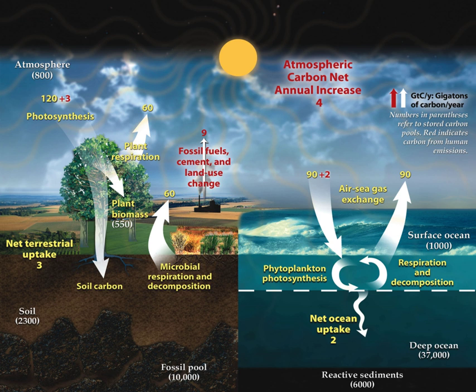Mineral sequestration aims to trap carbon in the form of solid carbonate salts. This process occurs slowly in nature and is responsible for the deposition and accumulation of limestone over geologic time. Carbonic acid in groundwater slowly reacts with complex silicates to dissolve calcium, magnesium, alkalis and silica and leave a residue of clay minerals. The dissolved calcium and magnesium react with bicarbonate to precipitate calcium and magnesium carbonates, a process that organisms use to make shells. When the organisms die, their shells are deposited as sediment and eventually turn into limestone. Limestones have accumulated over billions of years of geologic time and contain much of Earth's carbon.